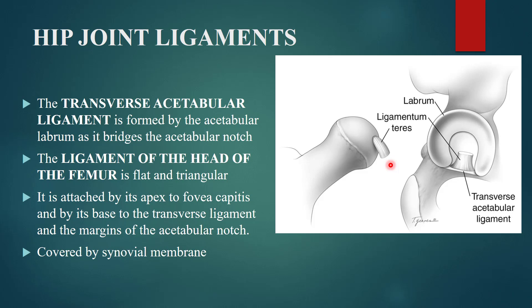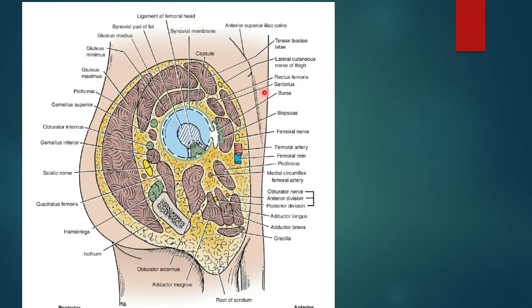These ligaments can be asked about in exams. Now for the important relations of the hip joint: anteriorly, the muscles include tensor fasciae latae laterally, rectus femoris, sartorius, iliopsoas, and pectineus. The femoral nerve is the nerve of the anterior compartment of the thigh, and the femoral artery and femoral vein are also present anteriorly.